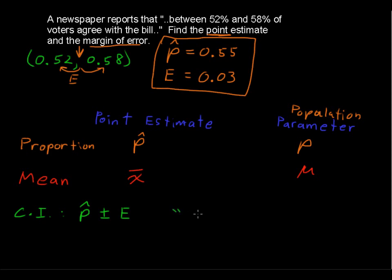So the paper could have, and a lot of times you'll see this, reported 55% agree with this bill. And then they would say there's a margin of error of plus or minus 3%. So they're kind of telling you that they've built the confidence interval with that information.